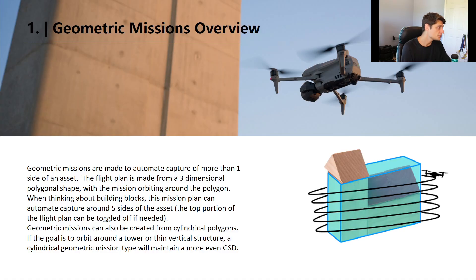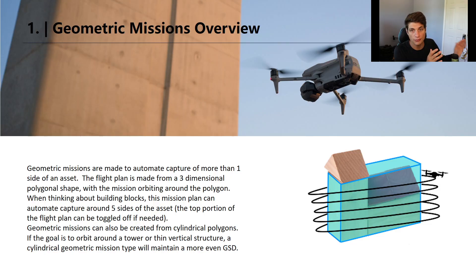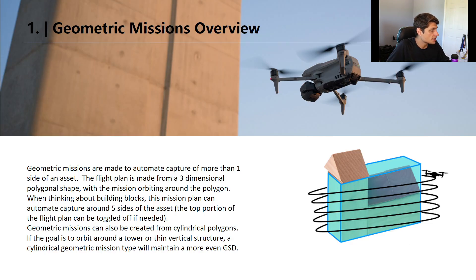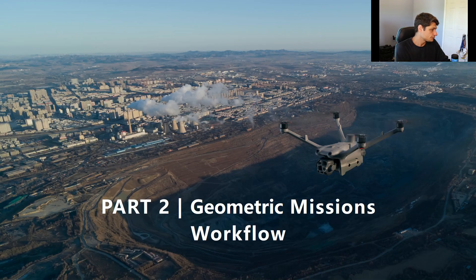Geometric missions are designed to capture more than one side of an asset — not just the roof or one flat side, but a three-dimensional box around whatever you're trying to capture. The flight plan consists of a three-dimensional polygonal shape with the mission orbiting around the polygon. This mission can automate capture around five sides of an asset; the top portion can be toggled off if needed. Geometric missions can also be created on cylindrical polygons, enabling spiral capture similar to a point of interest orbit.